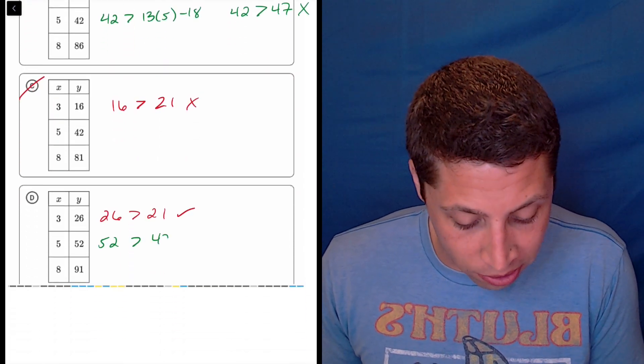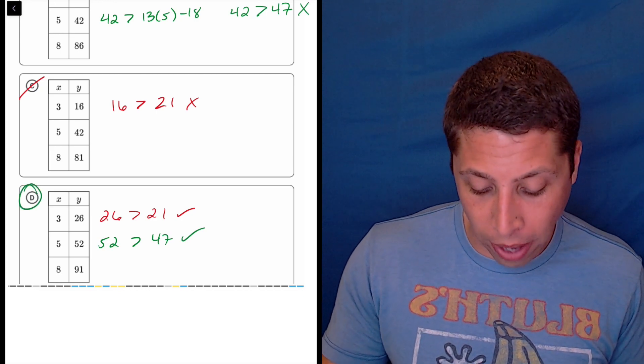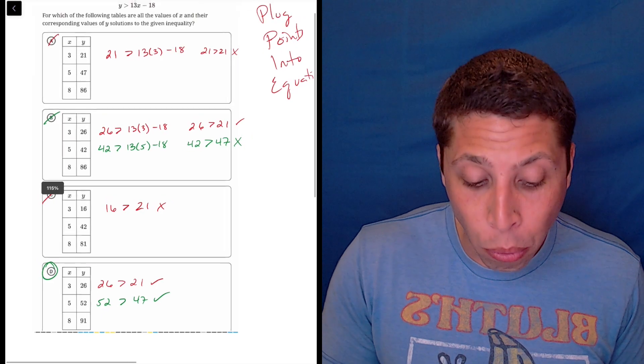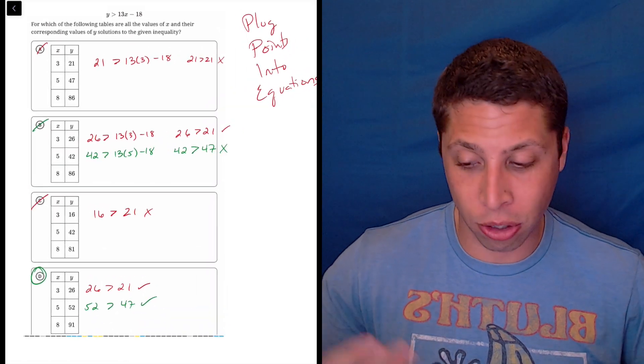52 is greater than 47. So that's a good sign. It would be enough for me to pick it. I guess I could try the last part, but at this point I've proven everything else wrong. So I'm very confident that D has to be the answer.